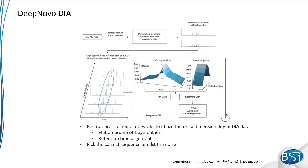We also have de novo sequencing for DIA data, developed with our DeepNOVO DIA method published in a Nature Methods paper. This uses deep learning, looking at the novel aspects of DIA data such as the fact that you're taking multiple scans of the fragment ions — so you can look at the elution profile of the fragment ions, the precursor ions, and also consider ion mobility details. The result is accurate de novo sequencing even using multiplex DIA spectra.